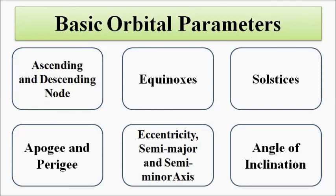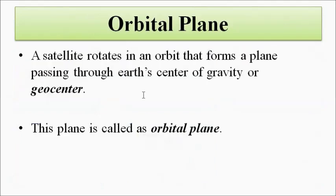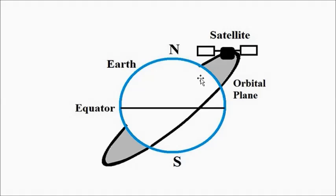Before we discuss these orbital parameters we must have a good understanding of some related concepts, such as the orbital plane. The satellite orbits or moves around a planet in a particular orbital path — it can be circular or elliptical. As the satellite moves it forms a plane which passes through the Earth's center, called the geocenter, and that is called the orbital plane.